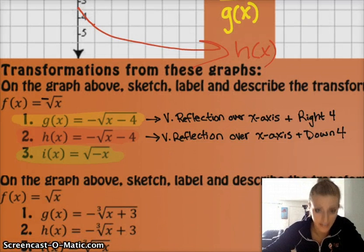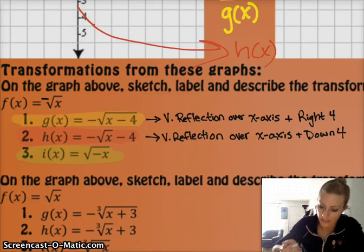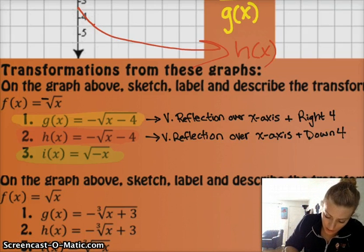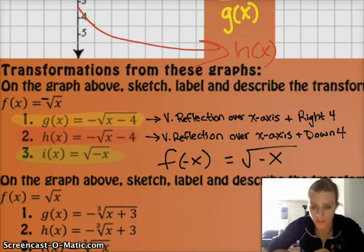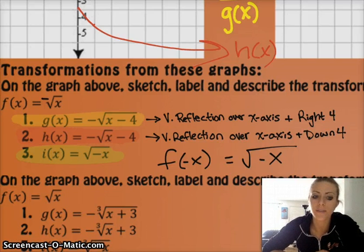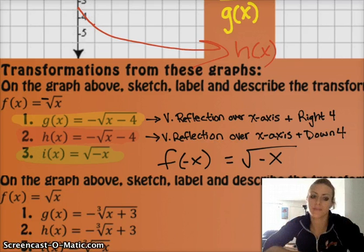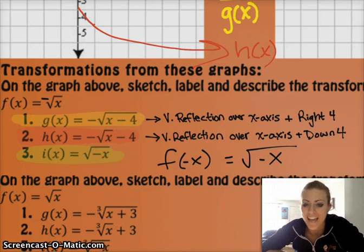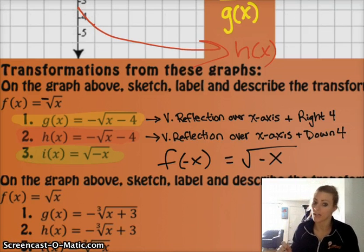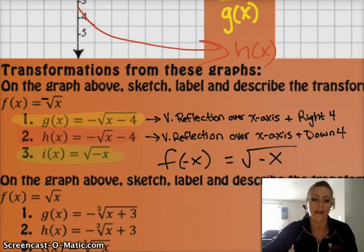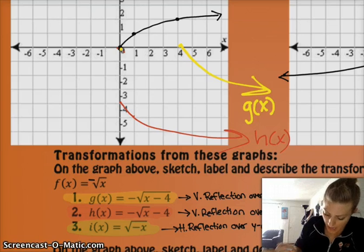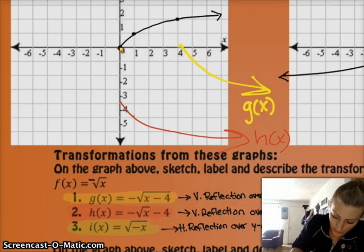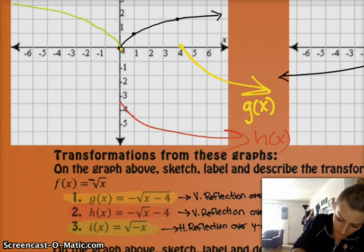Last but not least is the square root of negative x, which would be like taking f(x) — the square root of x — but putting a negative wherever the x was, so a negative on the inside. That's going to be a horizontal reflection, or a reflection over the y-axis. So that's going to take my original function — the black graph — and reflect it over the y-axis. That's i(x).